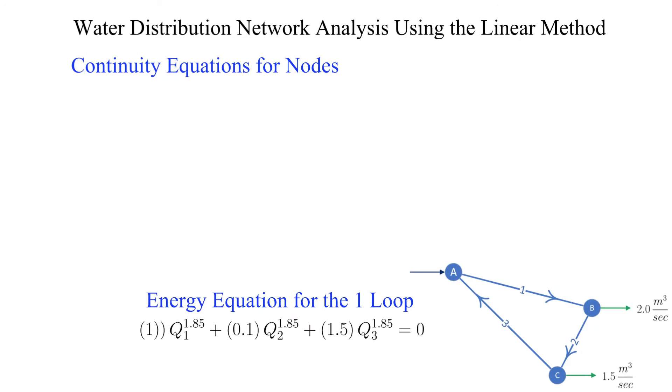For node B we get that q1 minus q2 equals 2.0. For node C we get that q2 minus q3 equals 1.5.